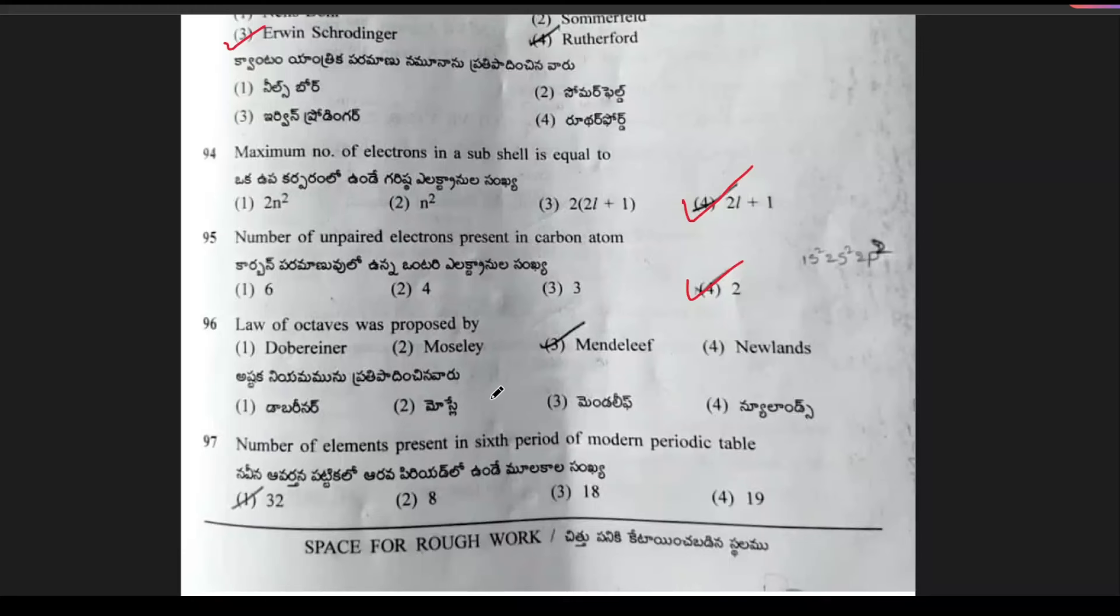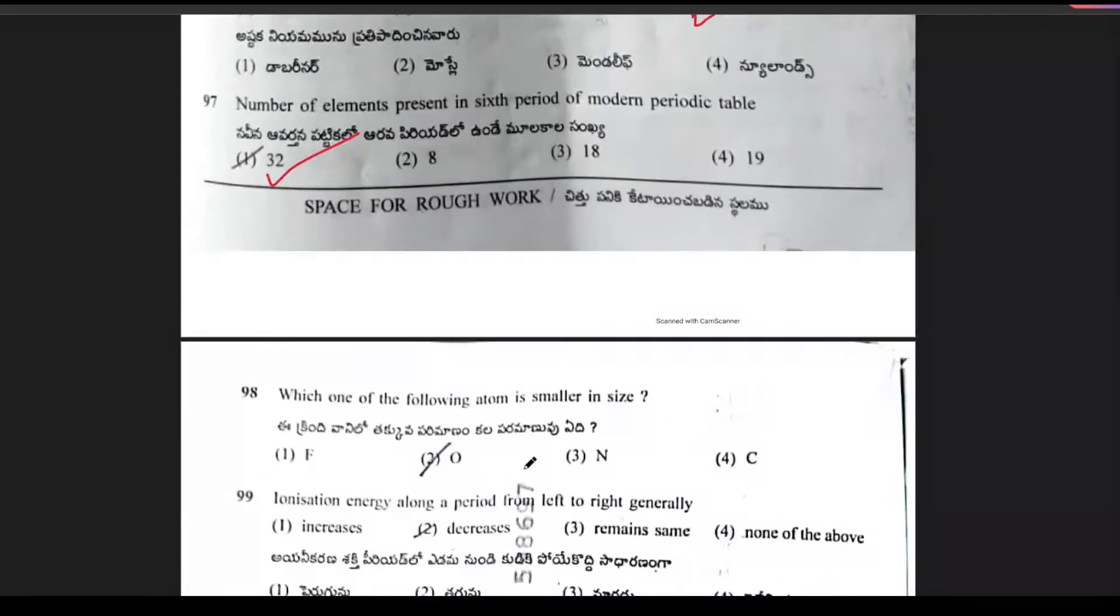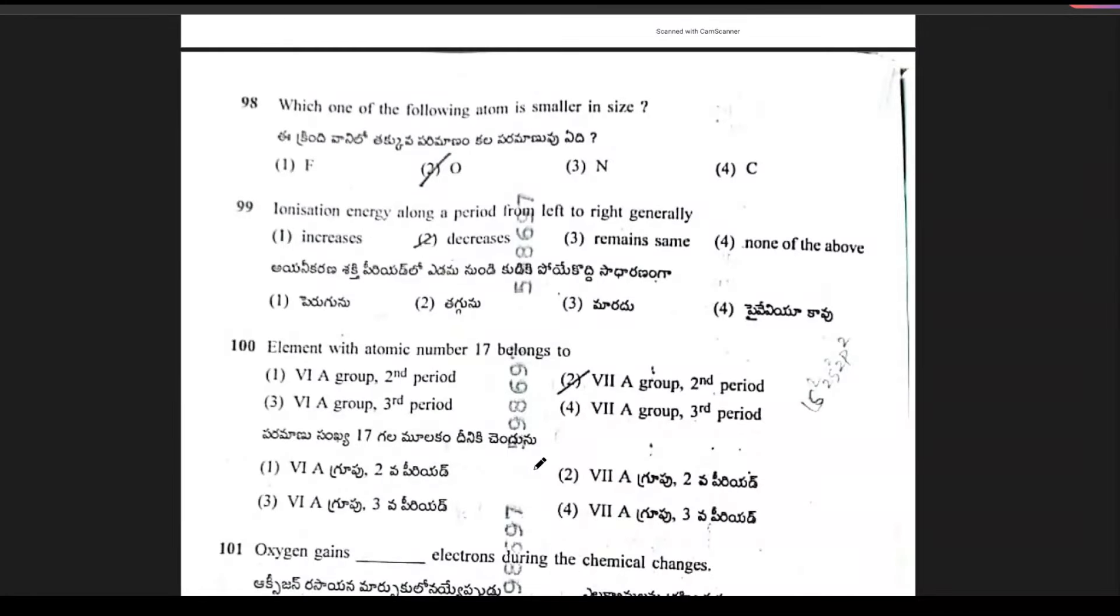Law of octaves was proposed by? It is Newlands. Next, number of elements present in 6th period of modern periodic table. The option is 32. 32 elements are present in 6th period. Next, 98th question: which one of the following atom is smaller in size? It is option A.